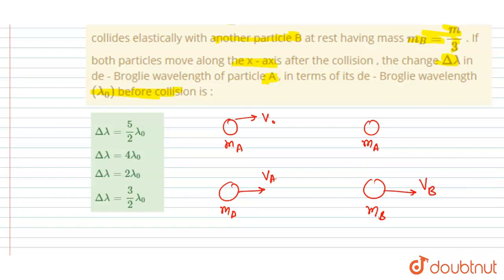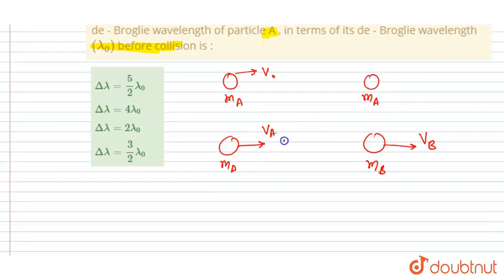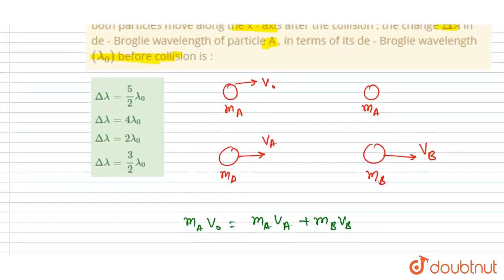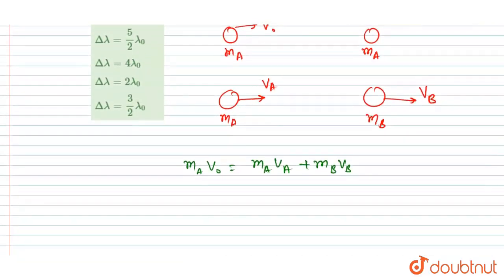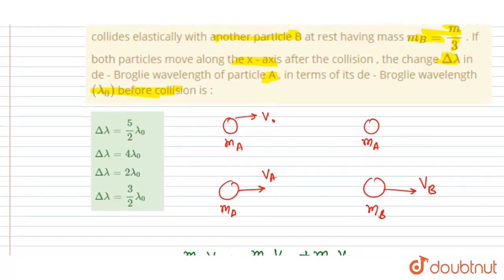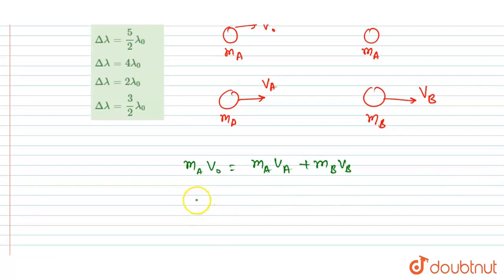Very simple. Now if you see here, there is no external force, so we can apply momentum conservation. So I will write initial momentum, that is mₐ into v₀, equals the final momentum. Now we need to calculate the velocity of particle A so that we could find out the de Broglie wavelength of particle A after the collision.